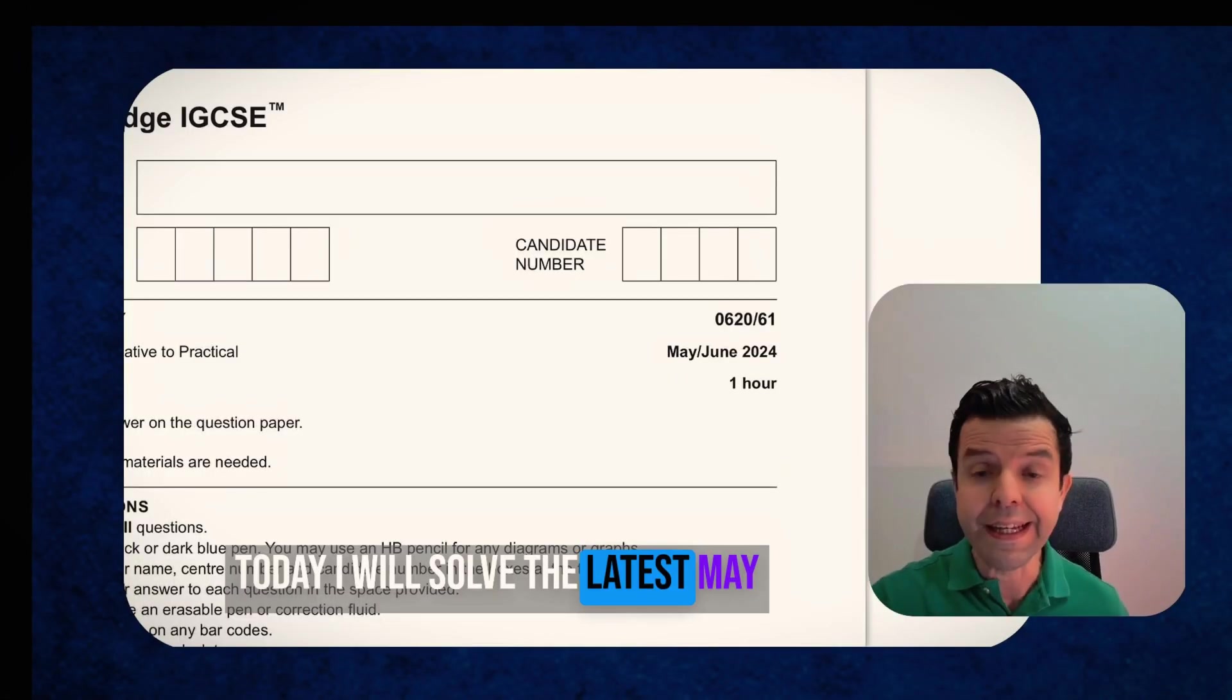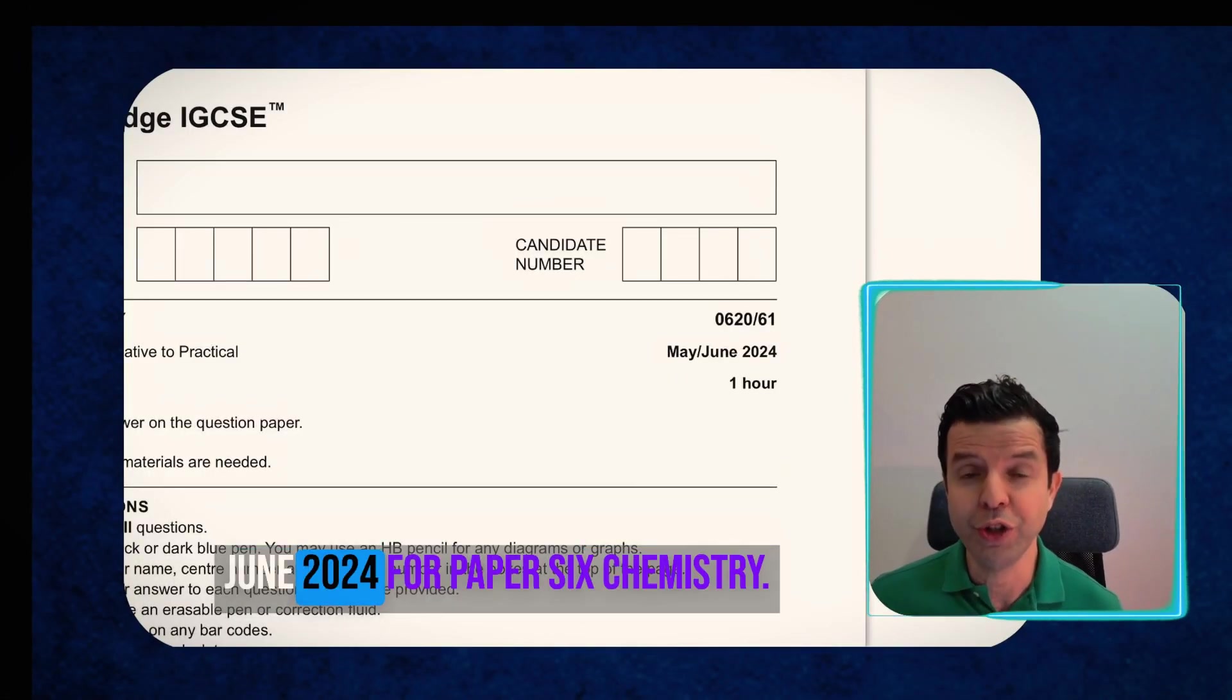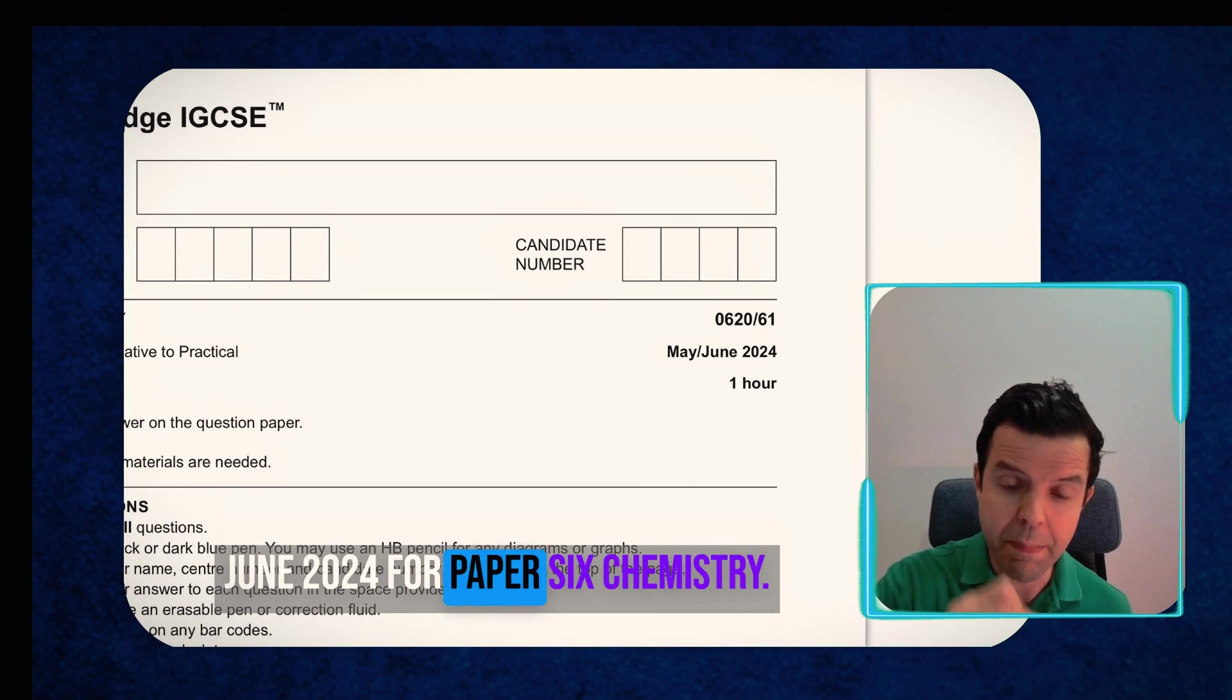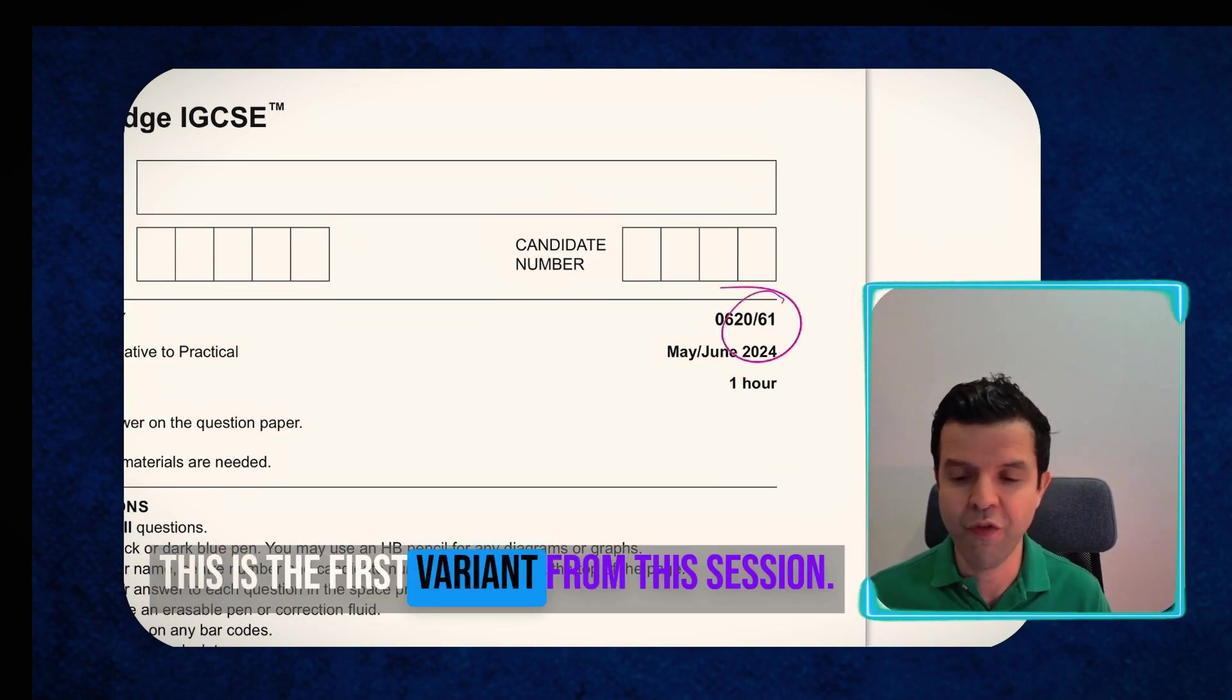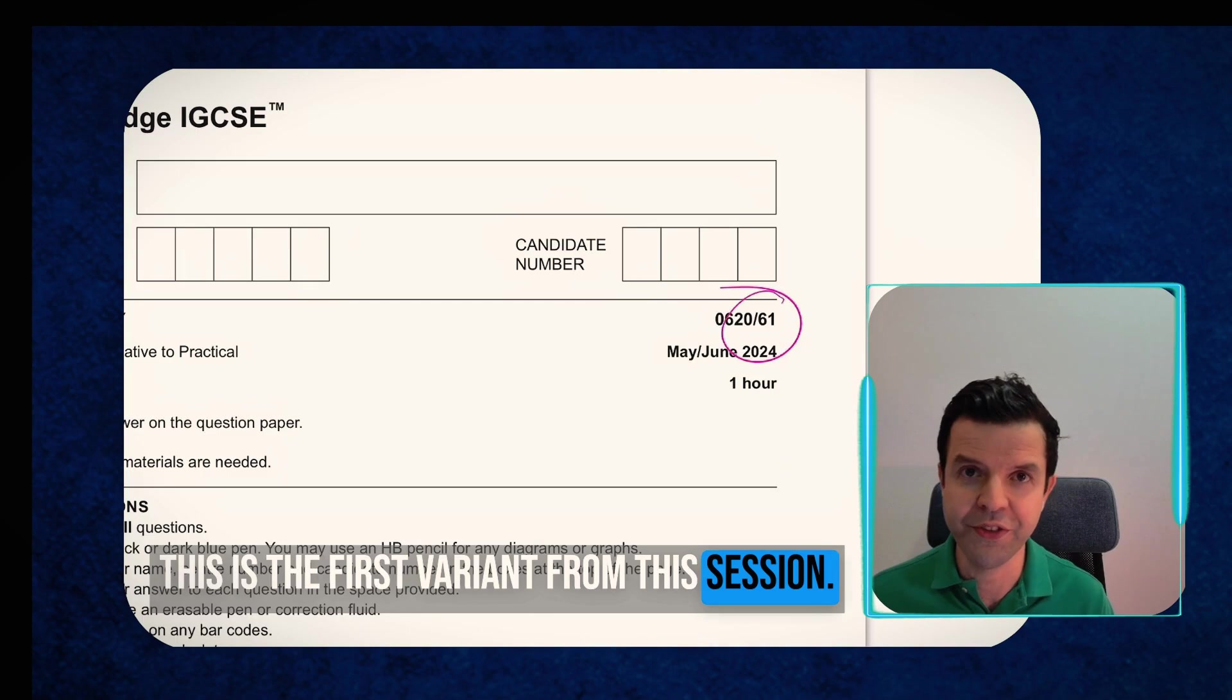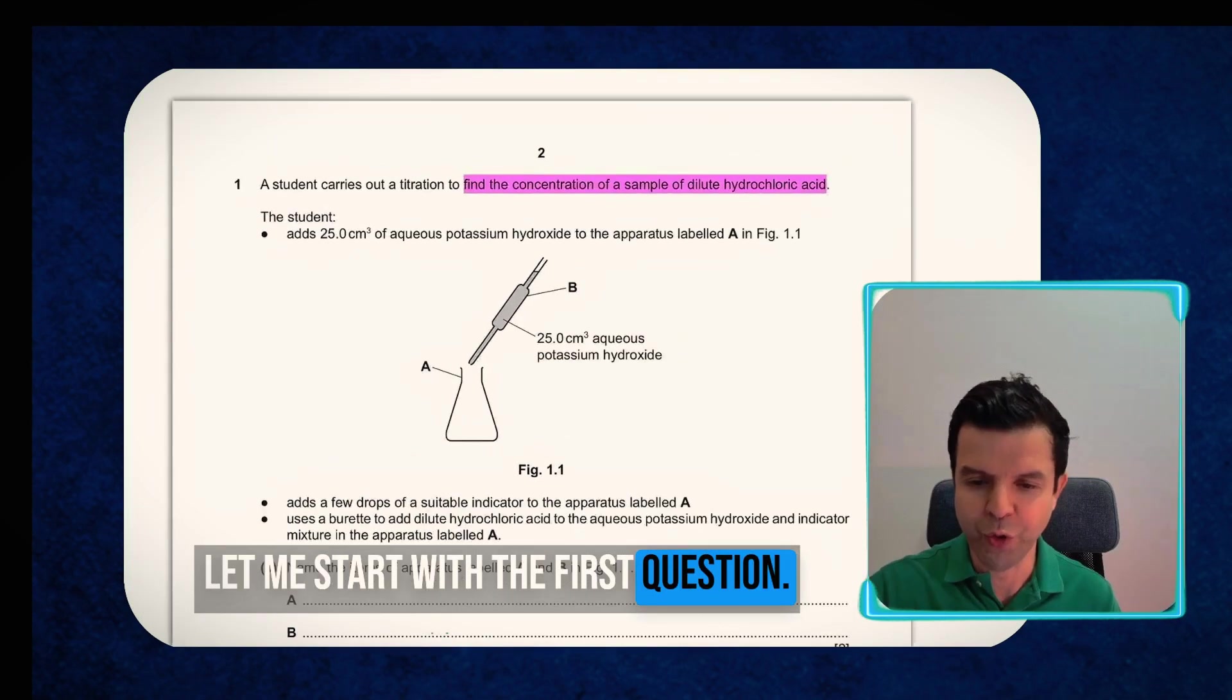Today I will solve the latest May-June 2024 Paper 6 chemistry. This is the first variant from this session. Let me start with the first question.